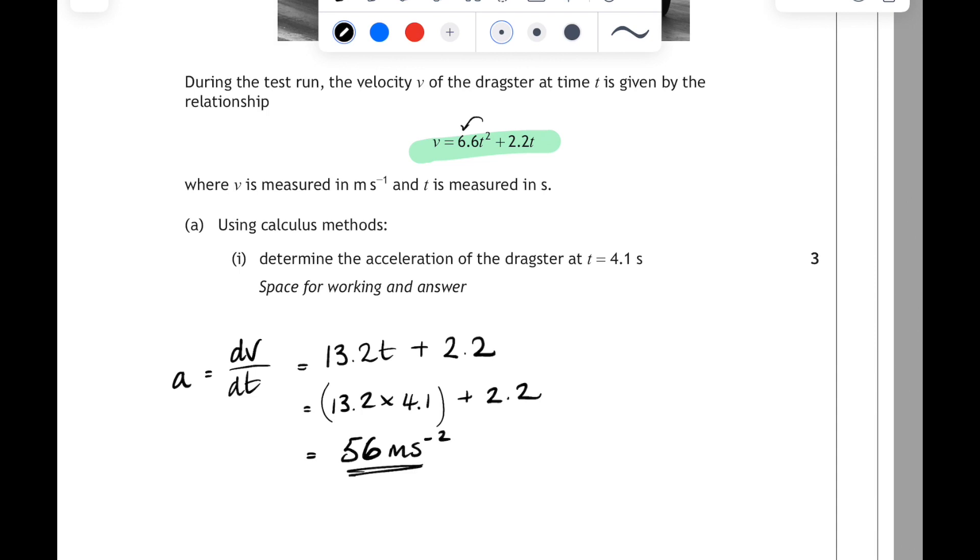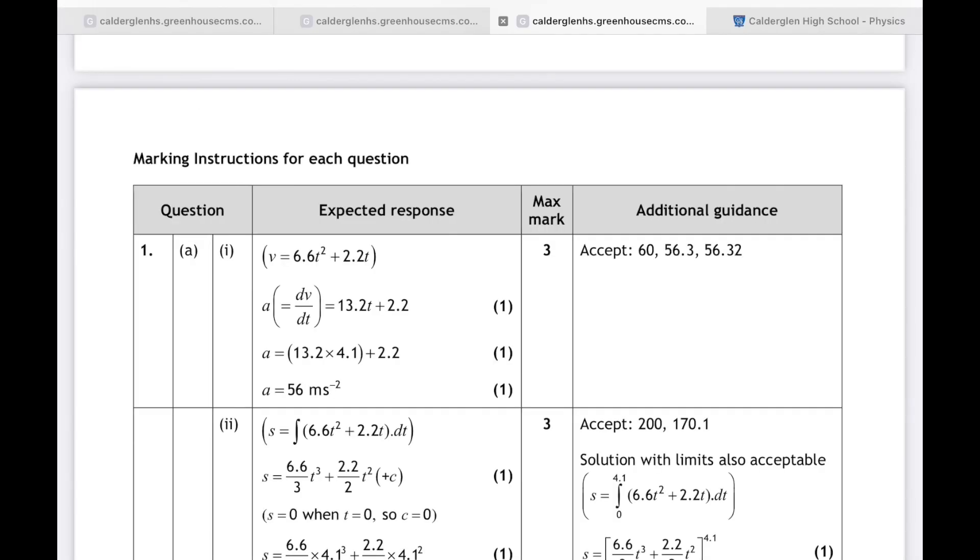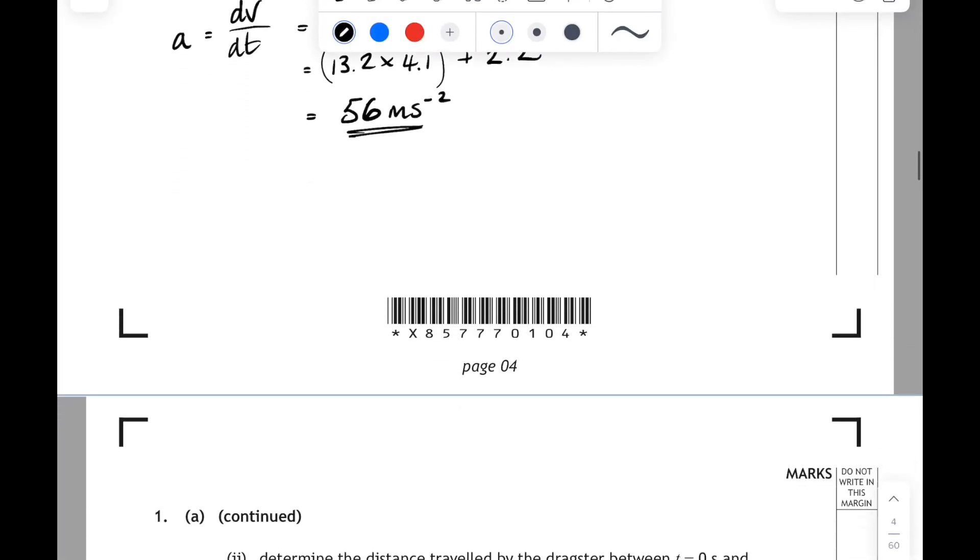And if we compare that with the SQA finalized marking instructions, we can see that it's worth three marks. One mark for differentiating, one for substituting, and one for the final answer with the correct units. And our answer is rounded to two significant figures, because the numbers in the question have got two significant figures.